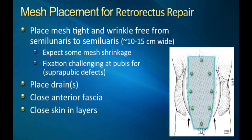For retrorectus mesh placement, I do it in a similar fashion — one superior and inferior fixation as well as two or three fixation points on the side. With both TAR and retrorectus repairs, I like the transabdominal fixation to offload the tension of my closure and put that tension onto the mesh itself. There have been videos showing retromuscular repairs with disruption of that posterior sheath. I believe that by placing some transabdominal fixation points, you can decrease the chance of a posterior or even an anterior fascial dehiscence by offloading that midline closure tension.